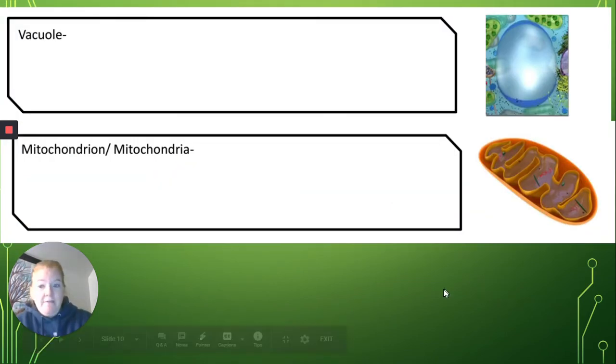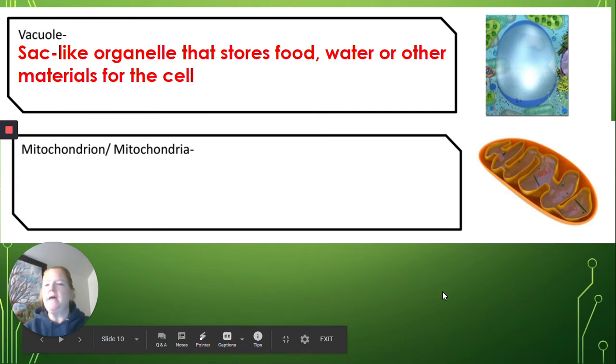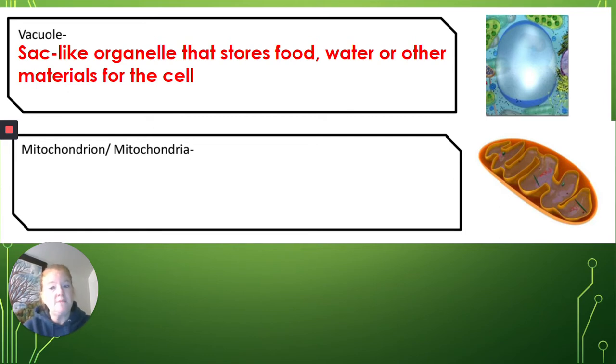Okay, so then we have vacuoles. Vacuoles are sac-like organelles of various sizes, and they store food, water, other materials for the cell. Sometimes it's storing waste until it can get out of the cell.